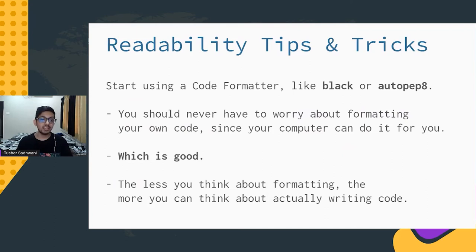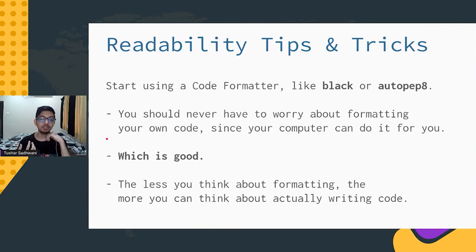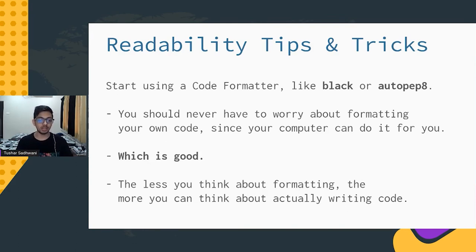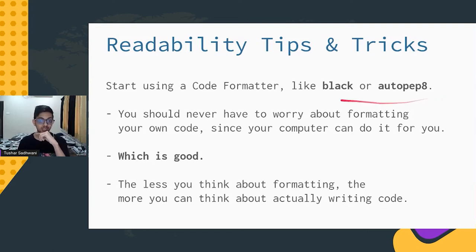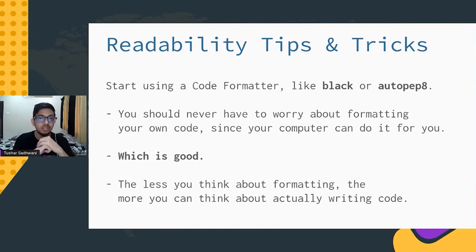The last tip is to start using a code formatter — for example, Black or autopep8. You should never have to worry about formatting your own code because the computer can do it for you. The less you have to think about formatting, the more you can focus on actually writing the code. If you're starting out, you should probably look at autopep8 because it's quite a bit more lenient in terms of its formatting, while Black is quite a lot more strict.